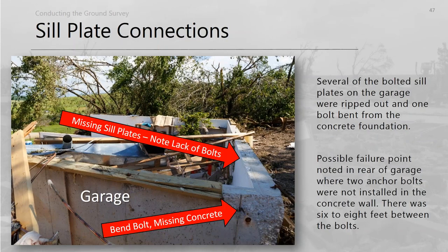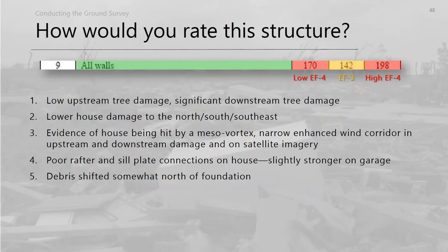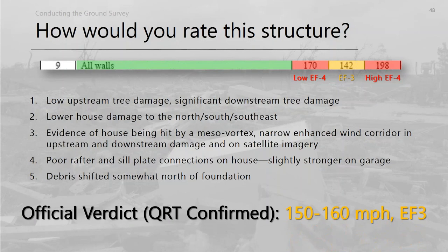Looking at the garage foundation, some bolts were missing from the back, one bolt was bent out of concrete, and some sill plates were yanked out with bolts still in them — very serious damage. Weighing the signs of a mesovortex, the questionable house construction quality, the more rigorous garage connections, and the debris movement, we rated it at approximately 150 to 160 mph EF3, confirmed by the QRT. Don't be afraid to take your time on a survey of a single damage point.